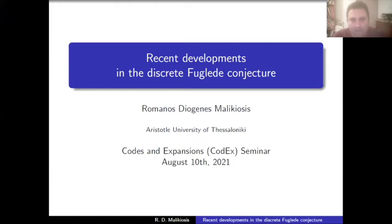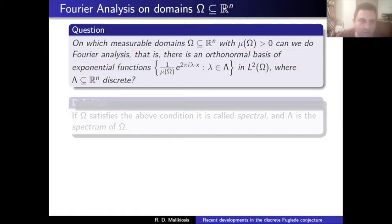I will talk about the discrete version of the Fuglede conjecture, a problem that has been around since 1974. There's a lot of activity going on in this problem, and I try to include almost all results that have happened in the last few years. I, for myself, have been working on it for four years, so let's try to see what this is about.